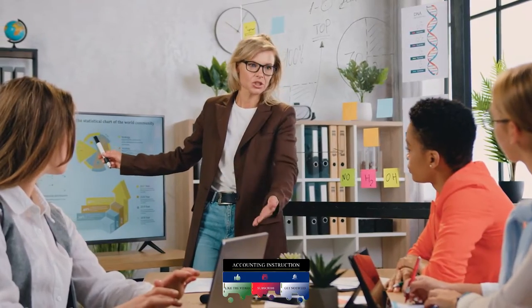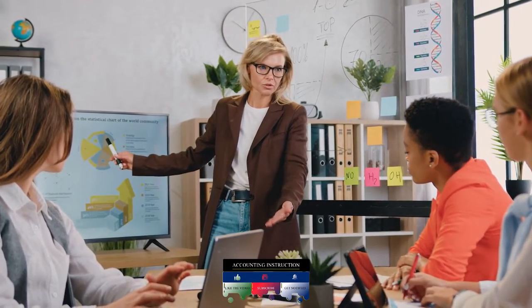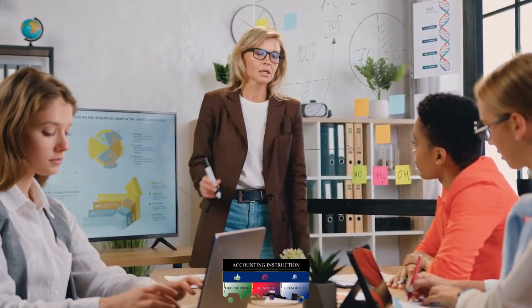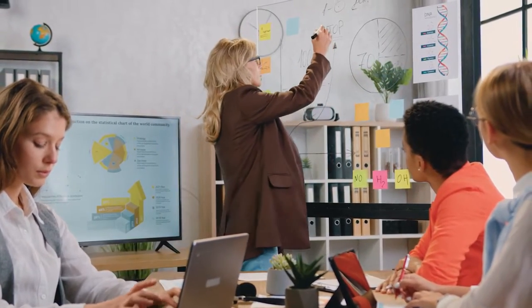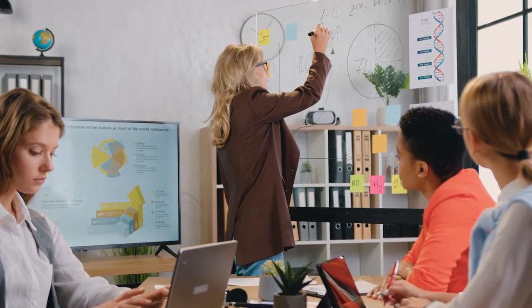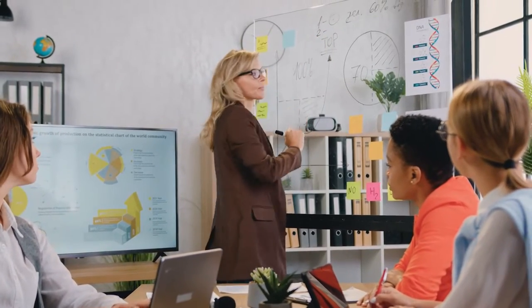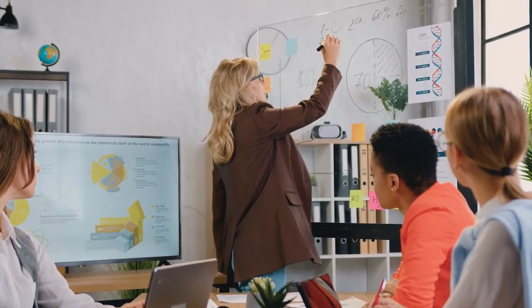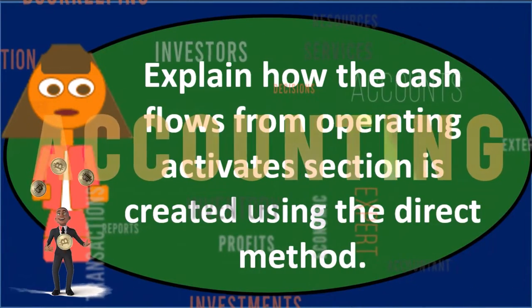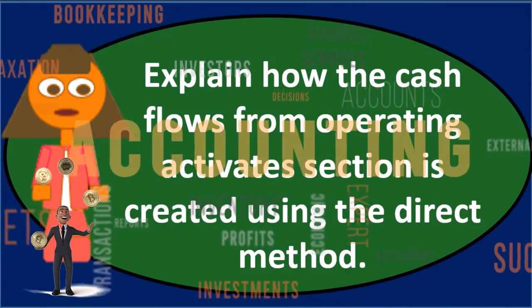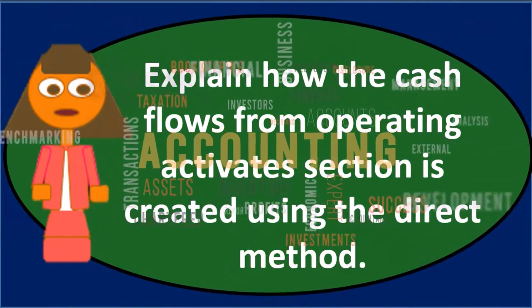It seems counterintuitive that the indirect method is actually the preferred method and the one we typically see most of the time. Part of the reason is that even if we use the direct method, it's often required to also include a reconciliation, which is basically the indirect method as well. Therefore, the direct method is probably less commonly seen, although it is more intuitive — the direct method makes a lot of sense when you think about it, and you can probably explain it to someone more easily.